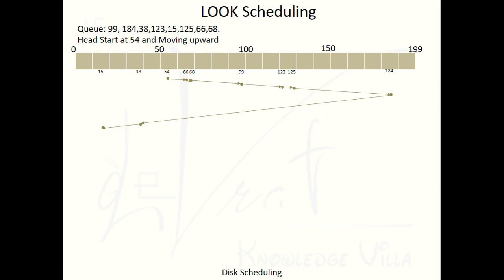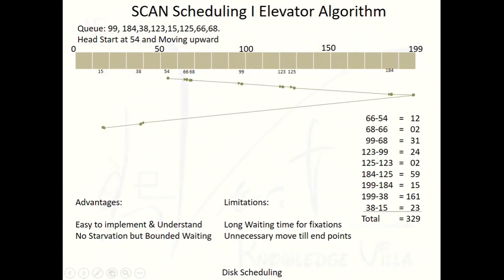What actually happens in SCAN scheduling? There is one limitation of SCAN scheduling, which is unnecessary movement till end points. After reaching track 184, there is no single request beyond 184, but still the head travels toward the end of the track — all the way to 199 — and then returns downward. So the head is traveling from 184 to 199 and back, which is 30 extra units.